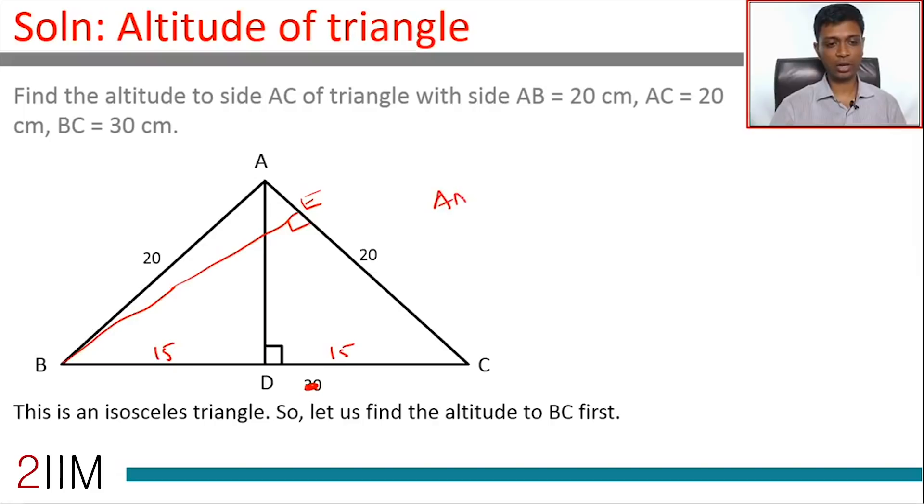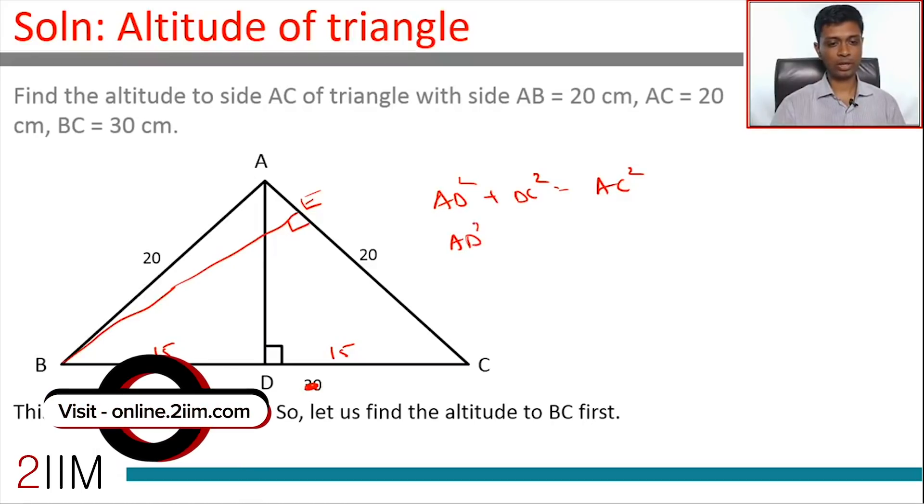So AD squared plus DC squared is AC squared, or AD squared plus 15 squared equals 20 squared, or AD squared equals 400 minus 225, which is 175.